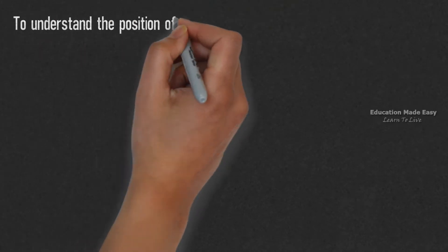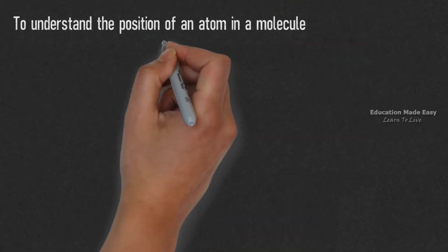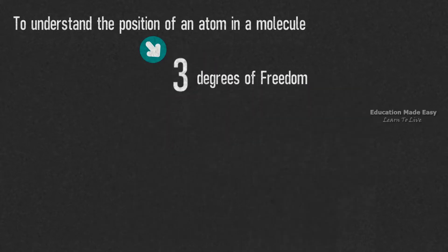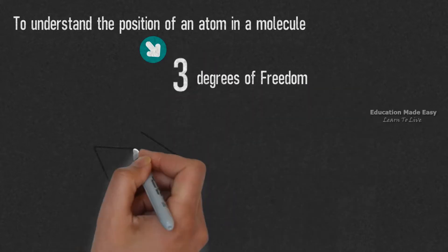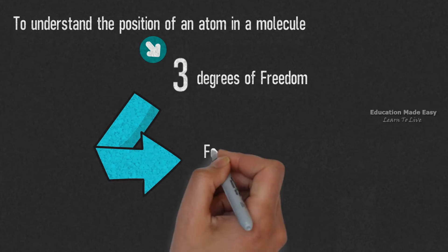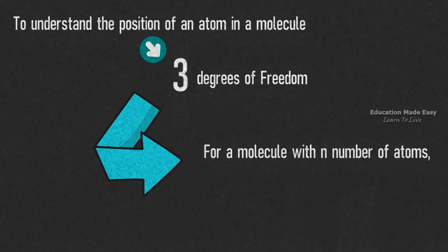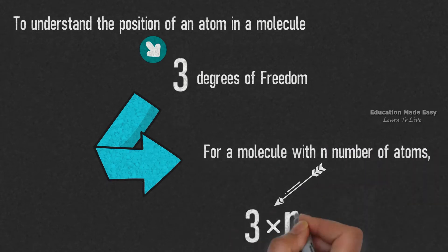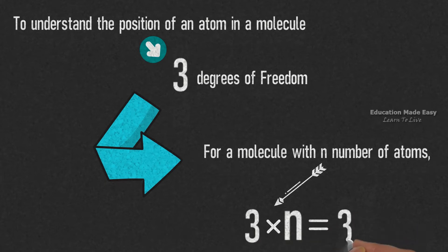In order to understand the position of an atom in a molecule, we require 3 degrees of freedom. This indicates that for a molecule with n number of atoms, there will be 3 × n degrees of freedom, which is equal to 3n, where 3 represents the degrees of freedom per atom and n represents the number of atoms in a molecule.